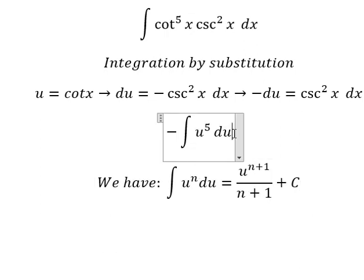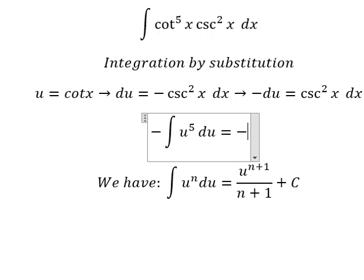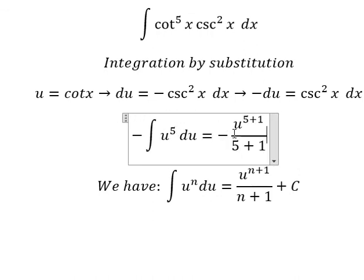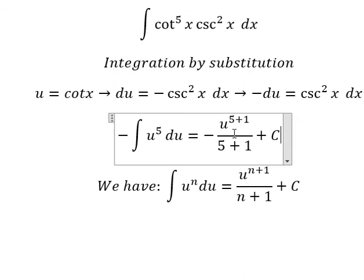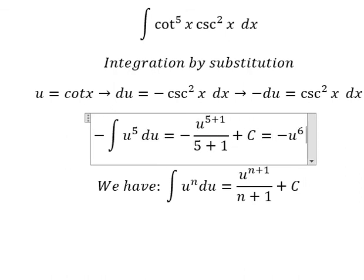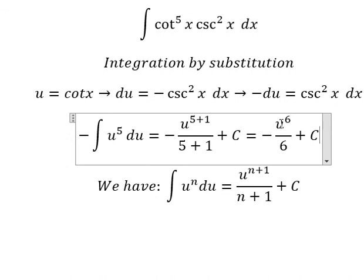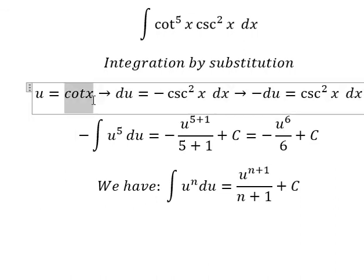So for this one, we have u to the power of 5 plus 1 over 5 plus 1, and I will add c. For u, that is cot x.